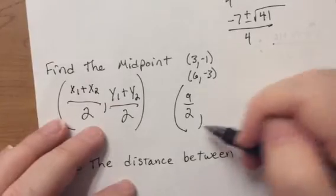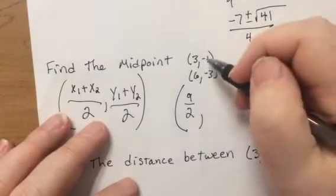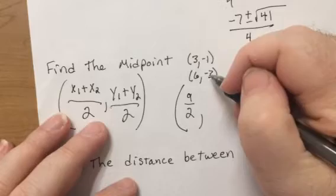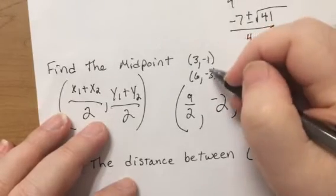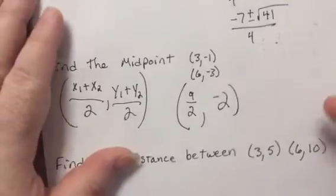If you want to put 4 and a half, 4.5, that's fine. Negative 1 plus negative 3 is negative 4. Divide by 2 is negative 2. Which, if you notice, that's right between those two numbers. That's what a midpoint is.